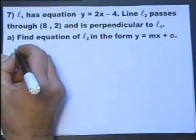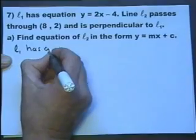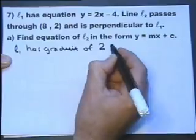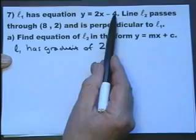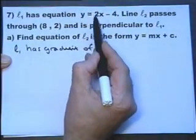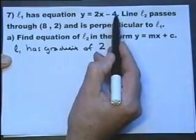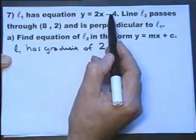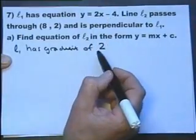So let's look at this first line, L1. L1 has a gradient of 2, because you should appreciate this is what we call y equals mx plus c, y equals mx plus c, where m is the gradient, and plus c, this would be, this line would pass through the point minus 4 if we drew it. But we don't have to draw it. So looking at that you should immediately know the gradient of that line is 2.